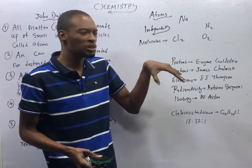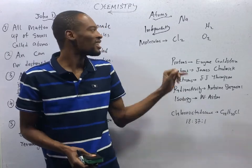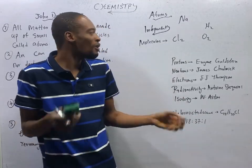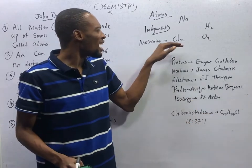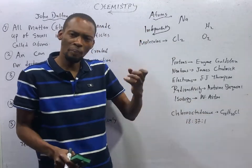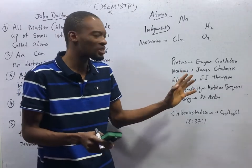When molecules are made up of the same type of atoms, they are referred to as elements. When molecules are made up of different type of atoms, they are referred to as compounds. So, elements are pure substance, compounds are pure substance. While mixtures are impure.